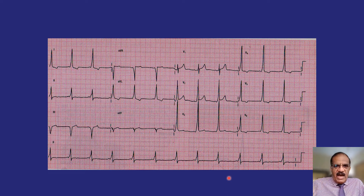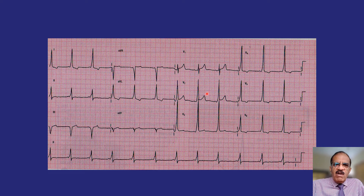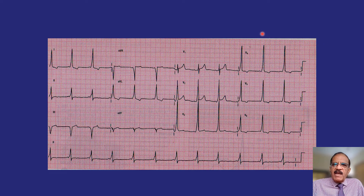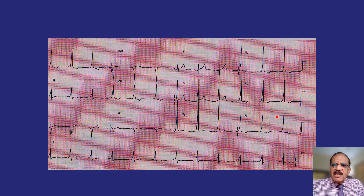Now let's do some ECG exercise. This ECG shows limb leads I, II, III, aVR, aVL, aVF and precordial leads V1 through V6. To study the rhythm, scan the entire strip from left to right. Several abnormalities are present: the QRS complexes are fairly tall and slightly broad, the PR interval looks rather small, and there are some ST depressions.